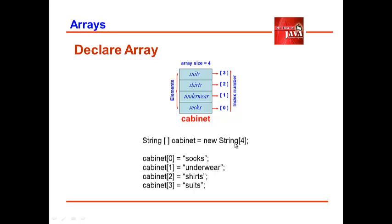The index of an array starts with 0, not 1. So if the last index number of an array is 10, the array size is 11. Identify the array size first before using it. In our example, we place 4 at the right side of the declaration after the string data type, enclosed in square brackets.